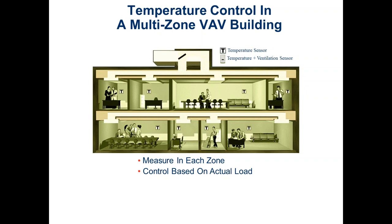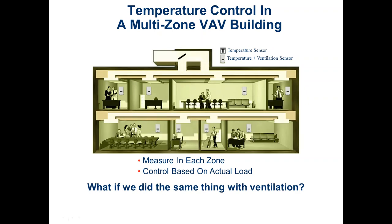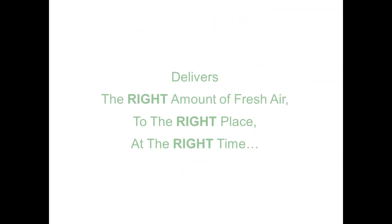I did my first CO2 system in 2000 — it wasn't even clearly allowed by code back then. It's not a new cutting-edge technology; it was just underutilized, mainly because a lot of systems had pneumatics instead of DDC controls. But now everybody has DDC. So that's what we're going to do: control systems for temperature and ventilation, and in some projects humidity and other factors as well.